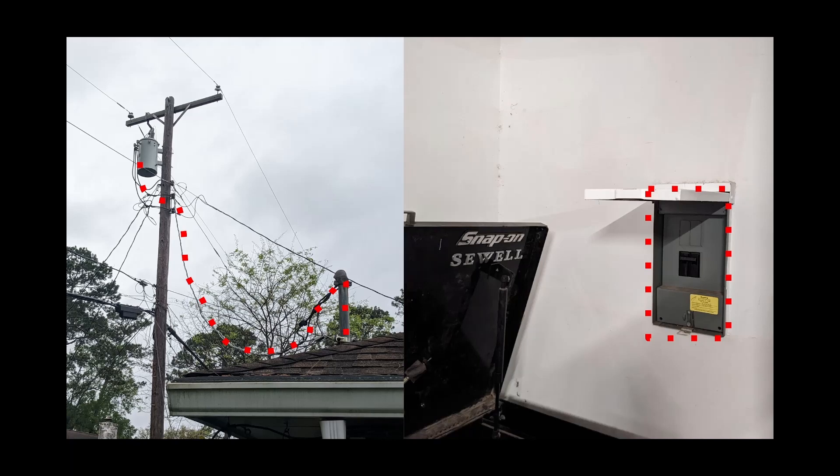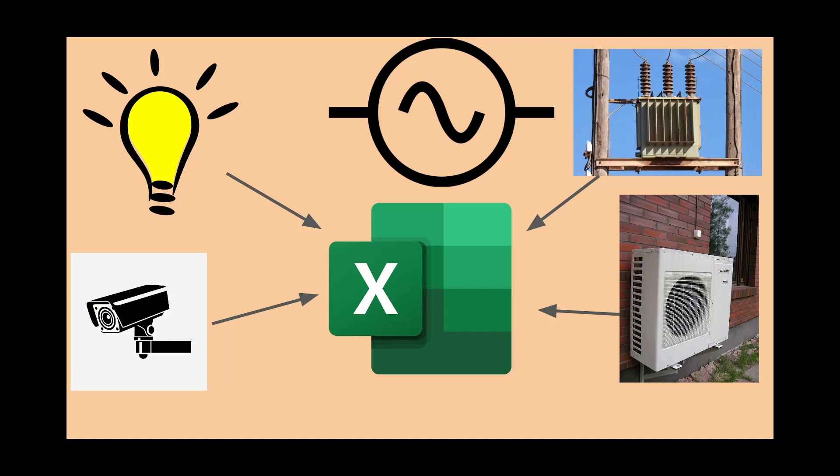Now that we understand what the purpose of an AC calc is, let's explore why AC power is needed in a substation. AC power is needed in a substation to provide power to station auxiliary loads. The next question from here is what are station auxiliary loads?